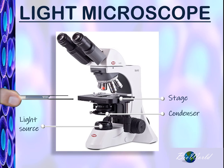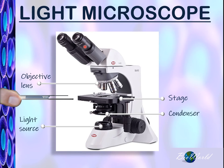We will rotate the objective lens to get the magnification that we want. Most of the time, light microscopes will have three objective lenses. The shorter the objective lens, the smaller the magnification. To view the specimen, we will place our eyes here at the eyepiece lens.